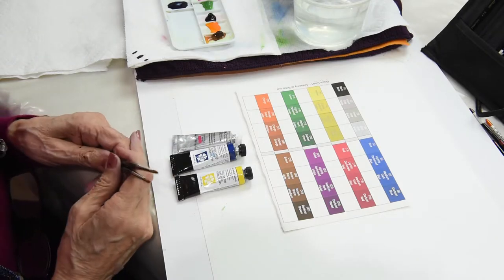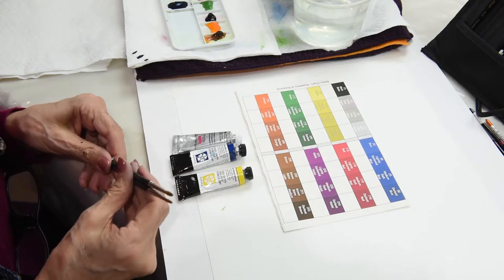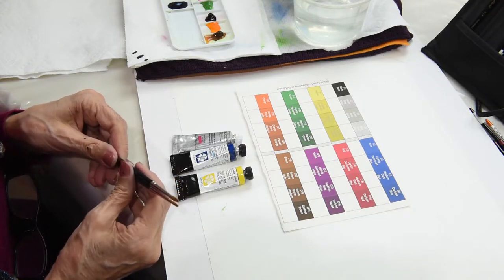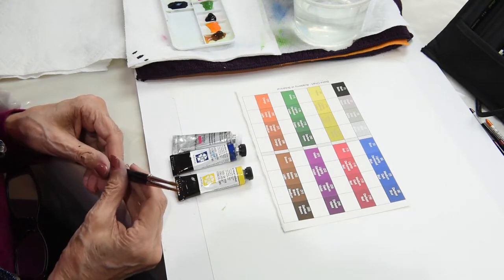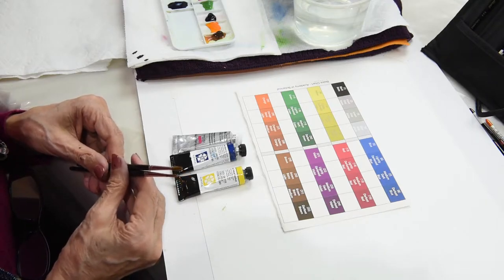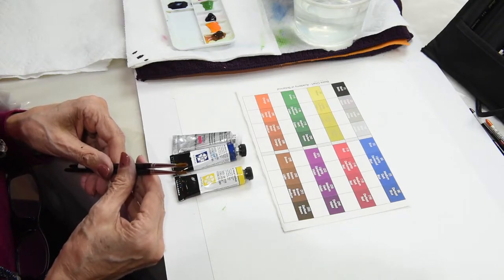For centuries, artists have used black, black primarily made with charcoal or tar. Bistra is made from three primary colors: red, blue, and yellow.